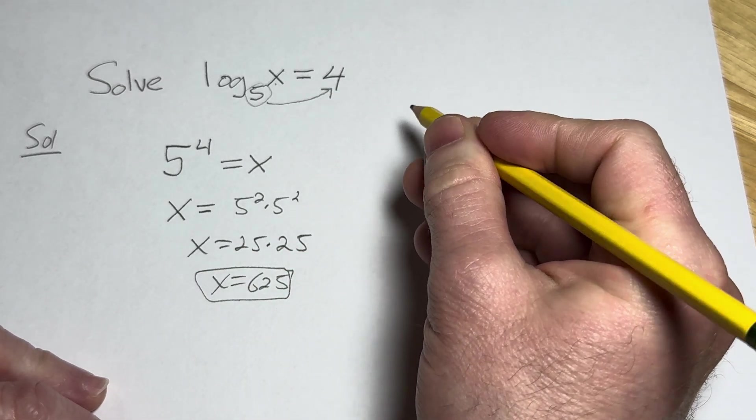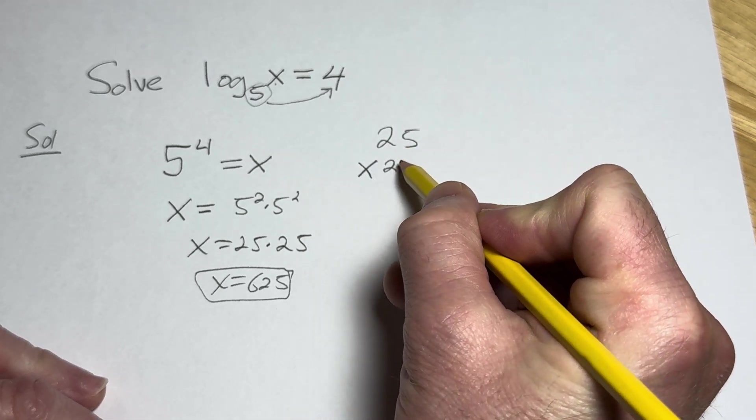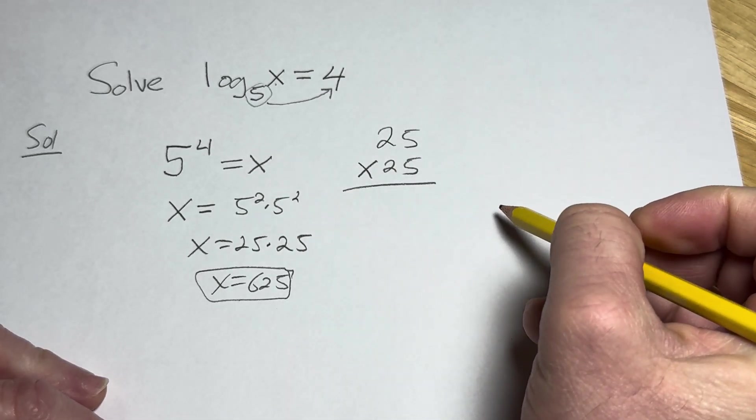If you don't know how to do that, you can use regular multiplication by hand: 25 times 25.